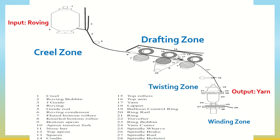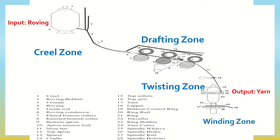The drafted strand of fiber coming from the front drafting roller is twisted by the help of the twisting zone. After twist insertion, the resultant yarn winding and twisting simultaneously takes place, converting the yarn into a suitable package.